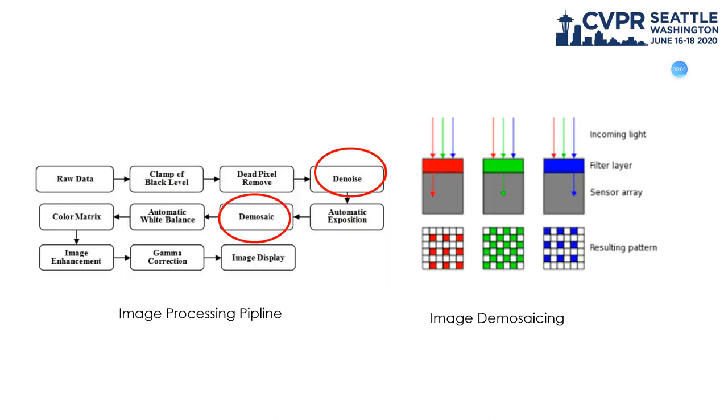Usually located at the very early stage of the computational photography pipeline, demosaicking and denoising play important parts in modern camera image processing.